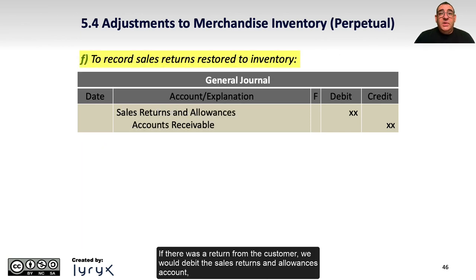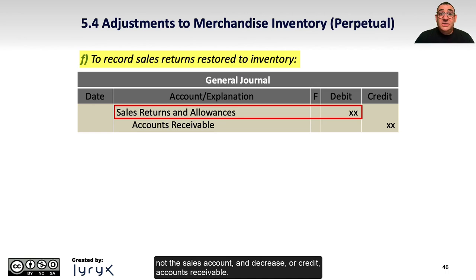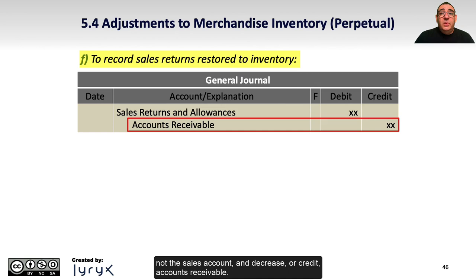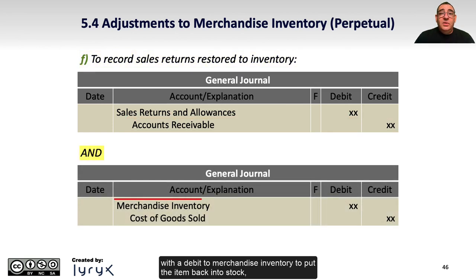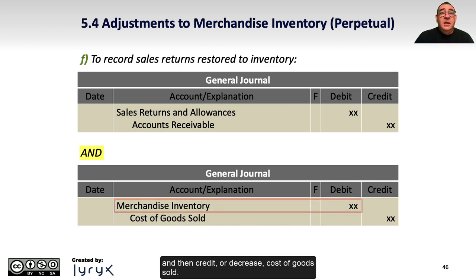If there is a return from the customer, we would debit the sales returns and allowances account — not the sales account — and decrease or credit accounts receivable. And don't forget to reverse the cost of goods sold entry with a debit to merchandise inventory to put the item back into stock, and then credit or decrease cost of goods sold.